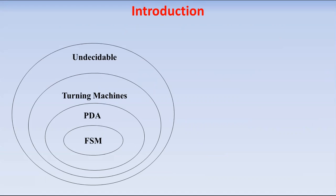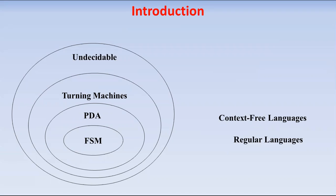In finite state machines, the class of languages accepted by them are known as regular languages. And in pushdown automata, the class of languages accepted by them are context-free languages. We saw the limitations of finite state machines and how these limitations can be overcome by pushdown automata, because it is more powerful than finite state machines. One step ahead, we are going to study about Turing machines, which are more powerful than both finite state machines and pushdown automata. The class of languages accepted by the Turing machines is recursively enumerable languages.